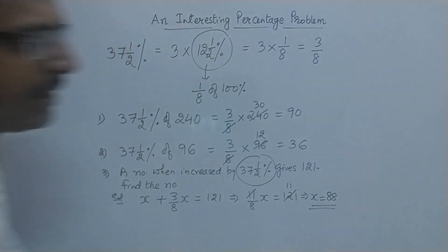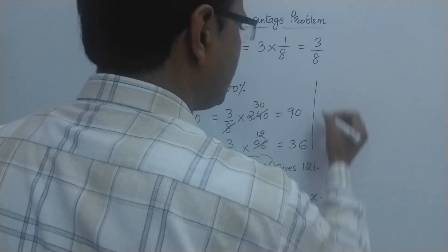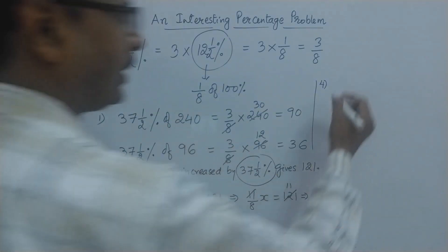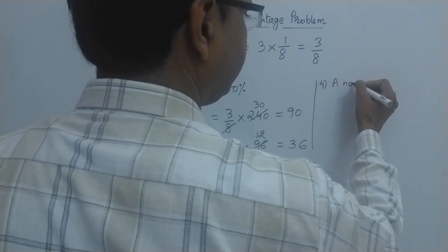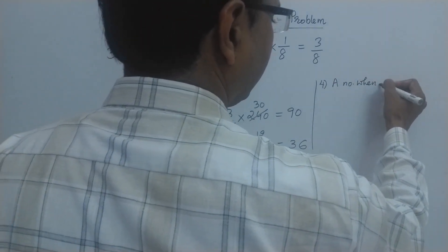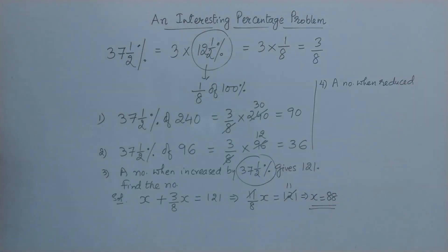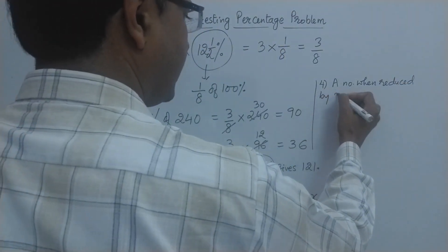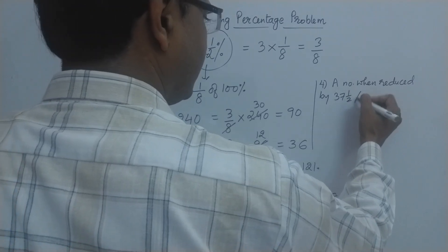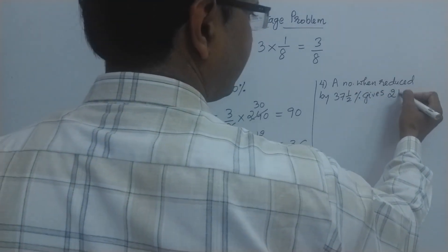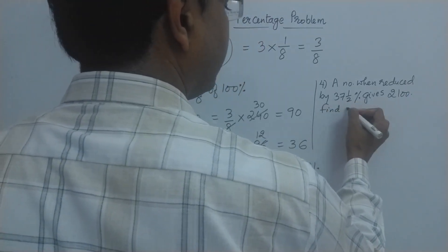Likewise, you can be asked to find the number if there is a reduction by 37.5%. So let's take another question. A number when reduced by 37.5% gives the number—let's take the quantity as 2100. So you need to find the number.